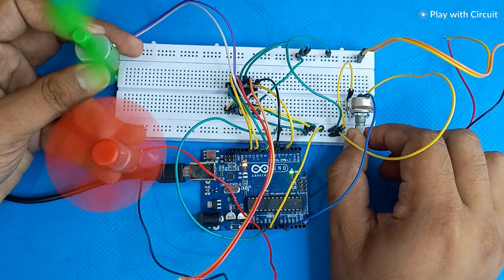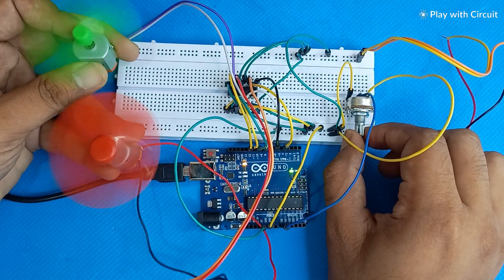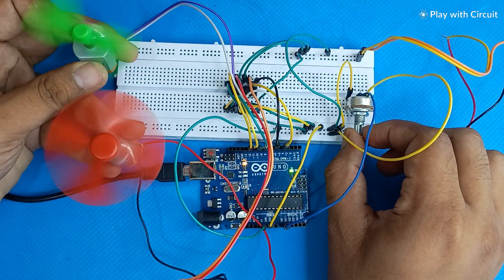Hello everyone, welcome back to Play with Circuit. In this video we will learn how to control DC motor using L293D motor driver IC with an Arduino UNO.